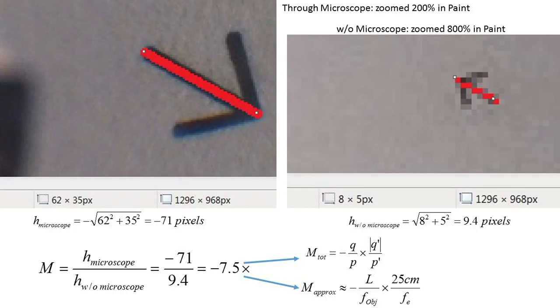You should compare the magnification of your microscope to the prediction from the application of the simple lens formula twice, as well as with the familiar approximation involving f-objective, f-eyepiece, length, and the 25 centimeter near point frequently quoted in textbooks.